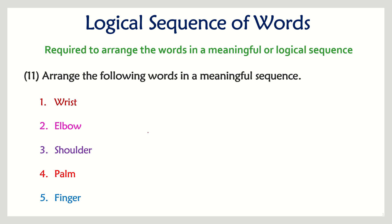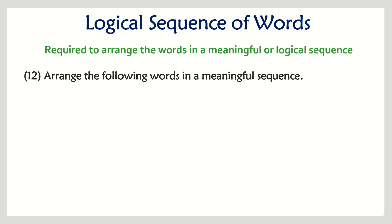Next question: wrist, elbow, shoulder, palm, and finger — all parts of a hand. Arrange them from top to bottom: first comes shoulder, after shoulder comes elbow, after elbow comes wrist, after wrist comes palm, and after palm comes a finger. That is the sequence.